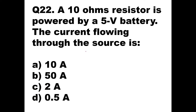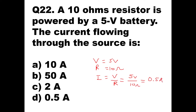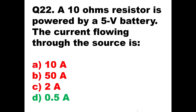Question number 22: a 10 ohm resistor is powered by a 5 volt battery. The current flowing through the source is how much? Here V = 5 volt and R = 10 ohms. So I = V/R according to Ohm's law. This equals 5 volt divided by 10 ohms, which is 0.5 amperes. So the answer is 0.5 ampere.